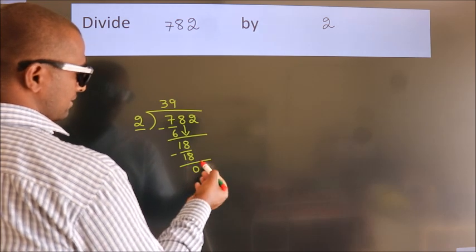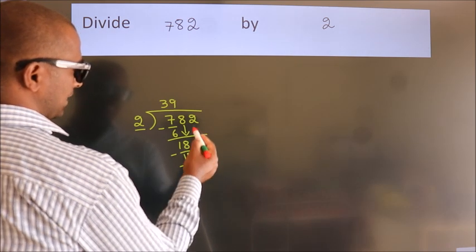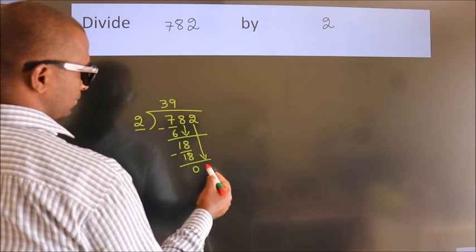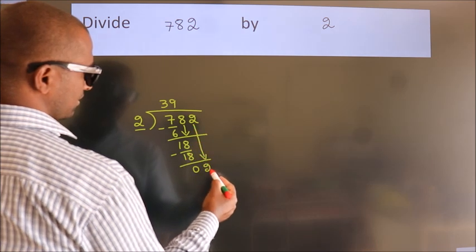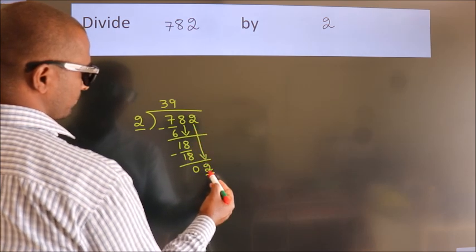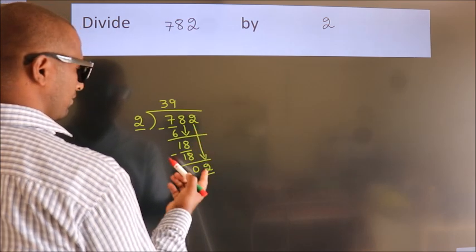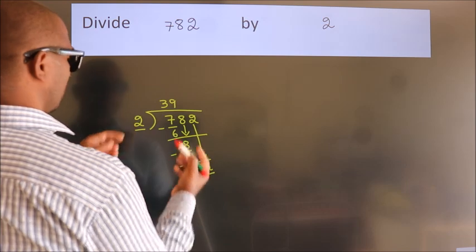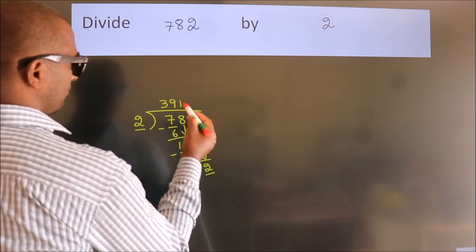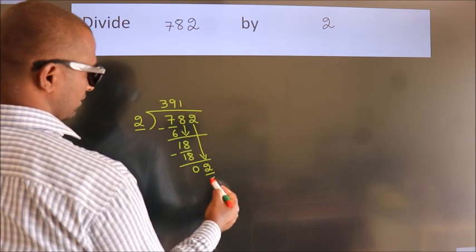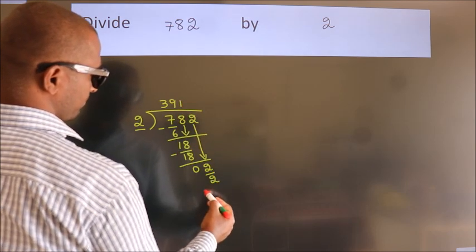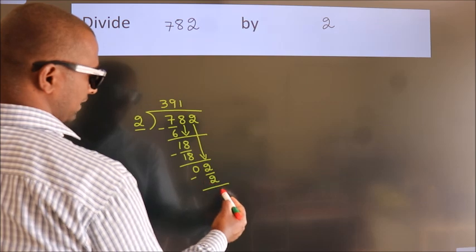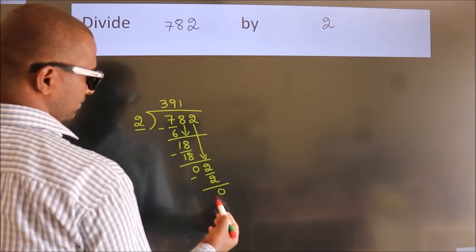After this, bring down the beside number: 2 down, so 2. When do we get 2 in the 2 times table? 2 ones — 2. Now we subtract and we get 0.